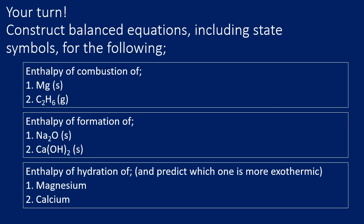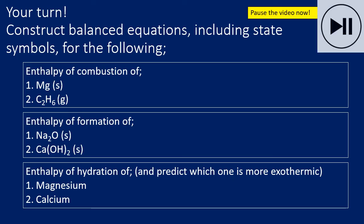Now there is a chance for you to have a go. Pause the video and construct equations for the six given enthalpy changes. There is an extra element in the final box asking you to predict which hydration is the most exothermic. As a clue: the stronger the bond, the more exothermic it will be. Unpause when you are ready to see the answers.